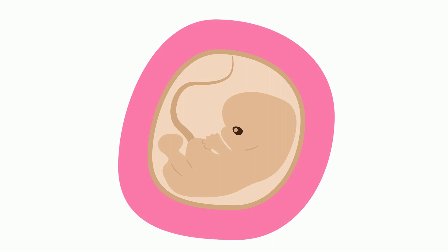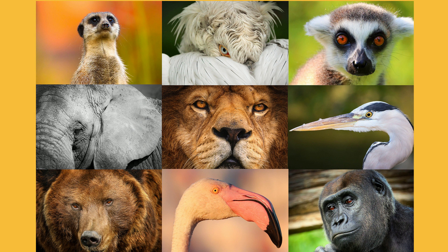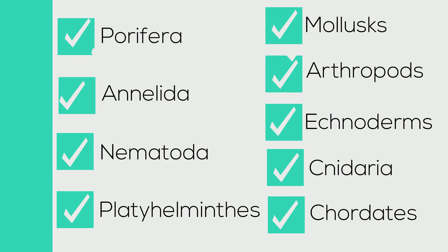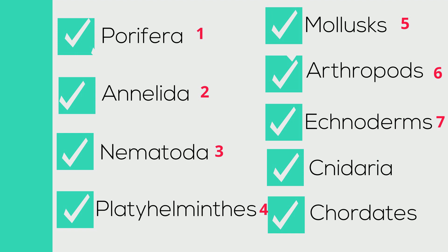Scientists have named and described over 1.5 million species of animals. There are more than 35 animal phyla, but more than 95% of all animals can be found in the following 9 phyla. The first 8 phyla contain invertebrates, which are animals that do not develop a backbone from a notochord.